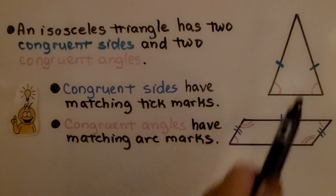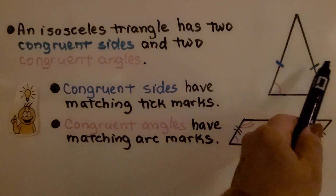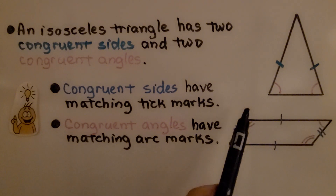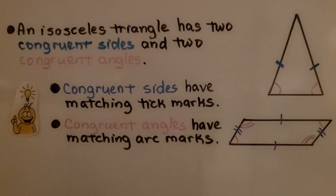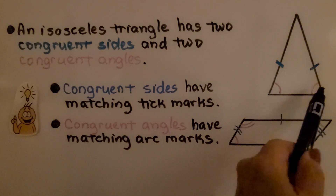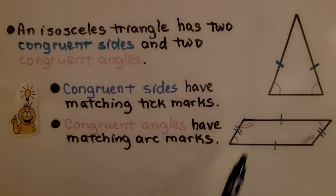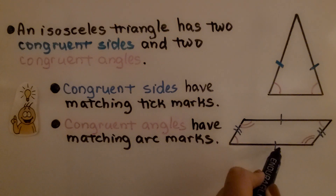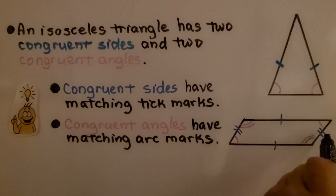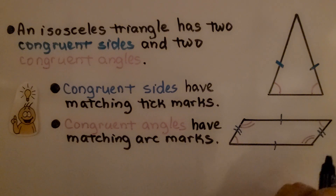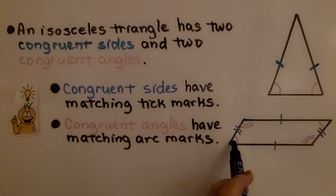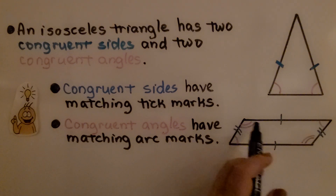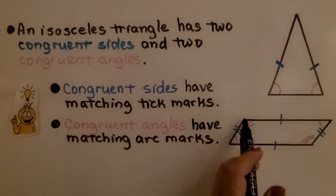This is an isosceles triangle. An isosceles triangle has two congruent sides and two congruent angles. Congruent sides have matching tick marks, and congruent angles have matching arc marks. Looking at this quadrilateral as an example: one tick mark here and one tick mark here means those two sides are congruent; two tick marks here and two tick marks here means those two sides are congruent. Similarly, one arc mark and one arc mark means those angles are congruent, and two arc marks and two arc marks means those angles are congruent.